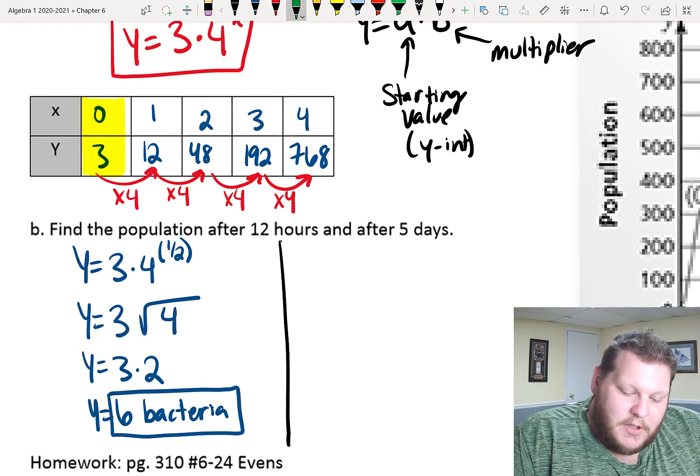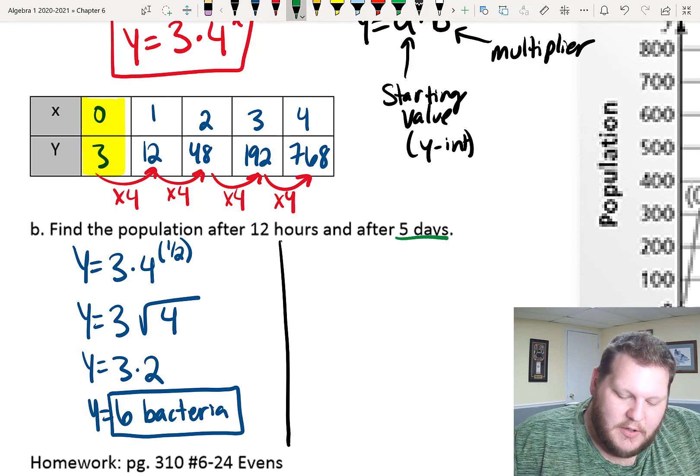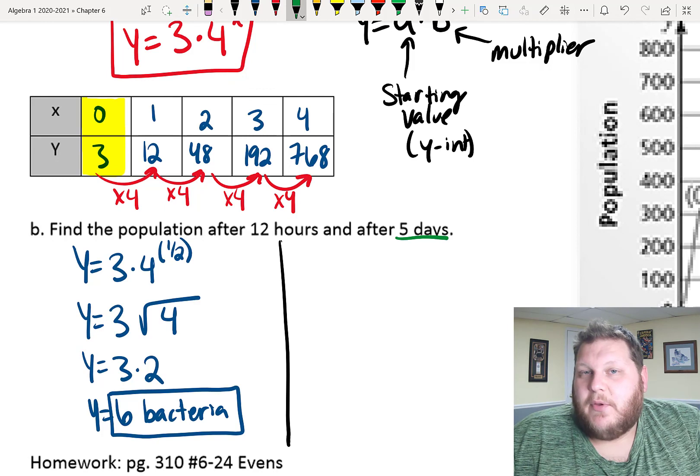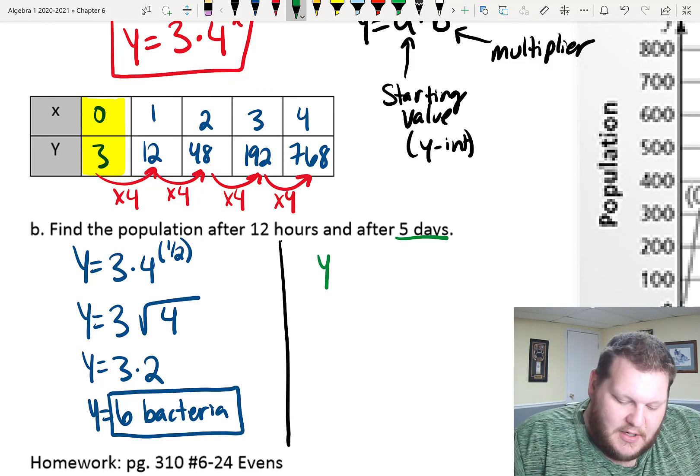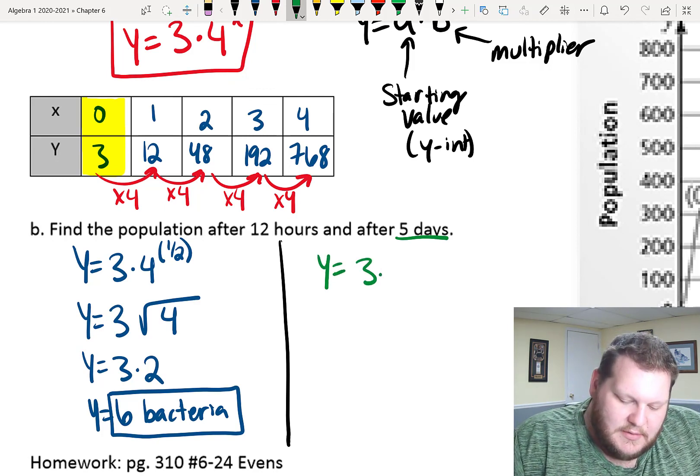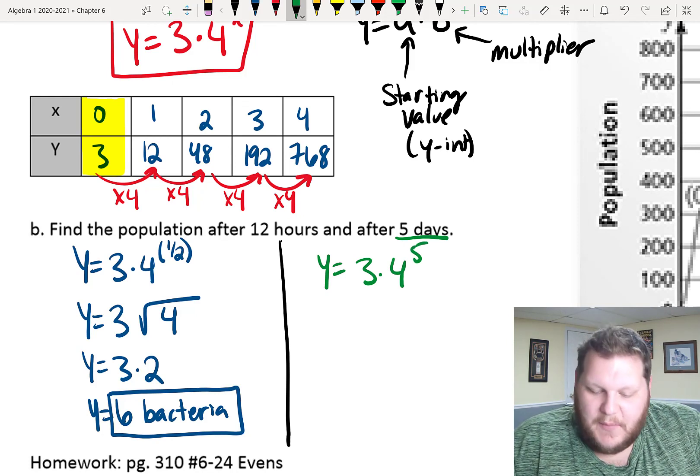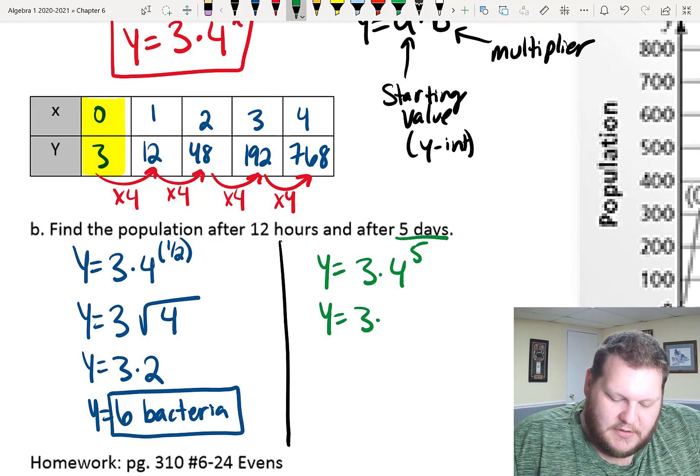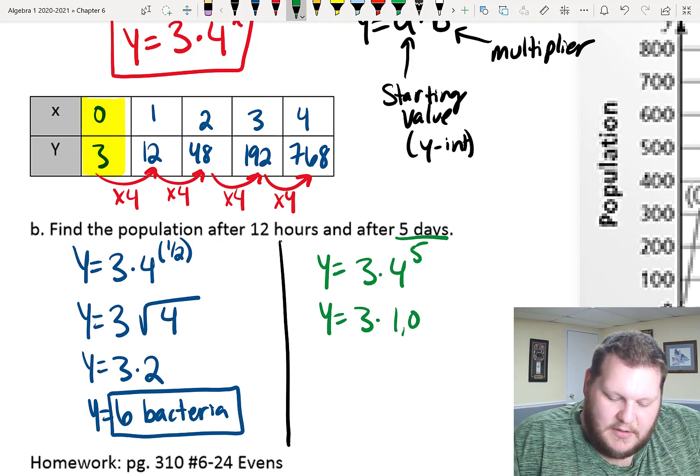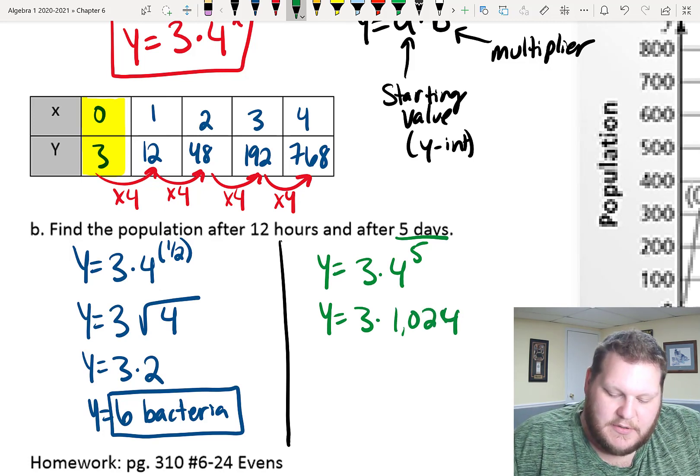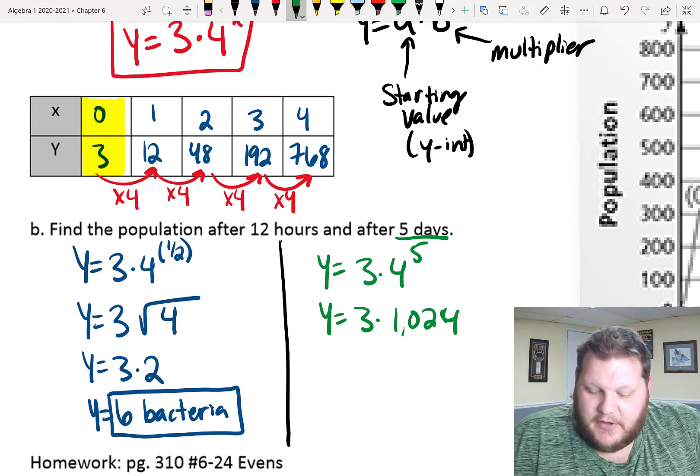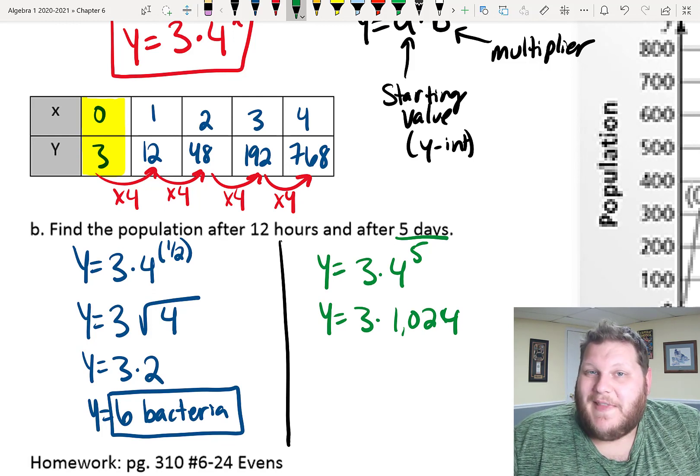For the second one, it's a little more straightforward. We were evaluating to find out the population after five days. Since our X unit is measured in days, we just do 3 times 4 to the fifth power. I wouldn't expect most of us or any of us to really do this in our head. I had to use a calculator when I was doing this before. That's not a very common one. 4 to the fifth power is 1,024.